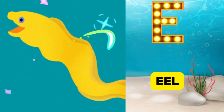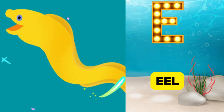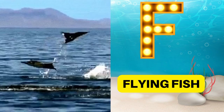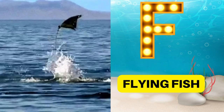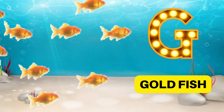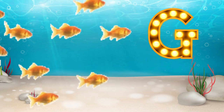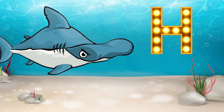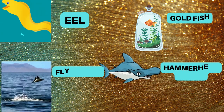E is for eel. Eh eh eel. F is for flying fish. Fuh fuh flying fish. G is for goldfish. Guh guh goldfish. H is for hammerhead shark. Ha ha hammerhead shark.